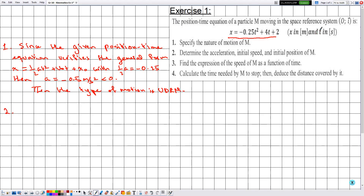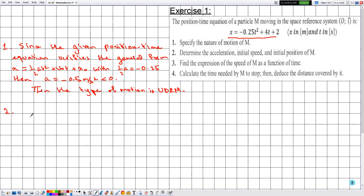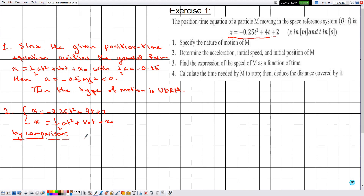For number two, we determine the acceleration, the initial speed v₀, and the initial position x₀ of M. This is done by comparing the given equation x = -0.25t² + 4t + 2 with the general equation x = ½at² + v₀t + x₀. We have already determined a = -0.5 m/s².